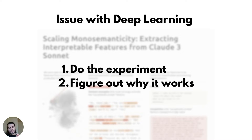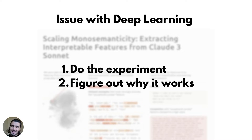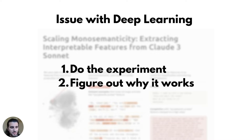Usually experiments are carried out, results are obtained, and the reason the results work is often not fully understood — it just works. There's usually a whole flurry of research afterward to figure out why the result is actually happening. It's like someone coming up with a new type of plane and not fully understanding how it works, and then doing studies afterward to understand why the plane is actually working. So it's very, very experimental.